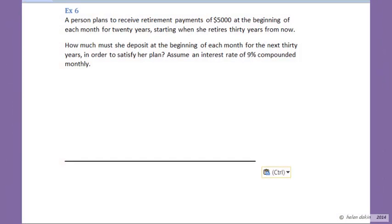Let's take a look at example 6. A person plans to receive retirement payments of $5,000 at the beginning of every month for 20 years, starting when she retires 30 years from today. How much must she deposit at the beginning of each month for the next 30 years in order to satisfy her plan? Assume an interest rate of 9% compounded monthly.